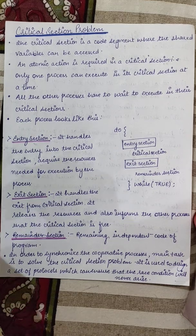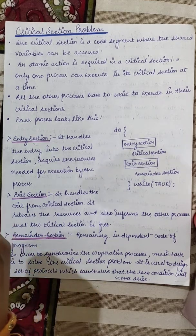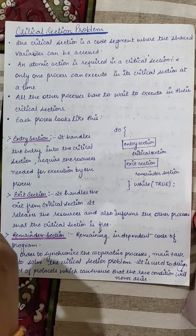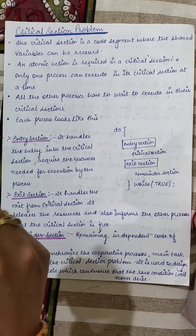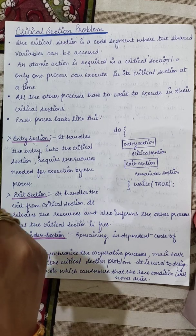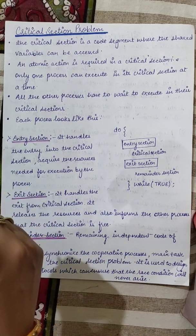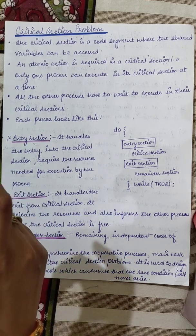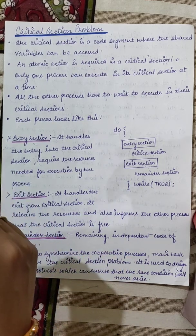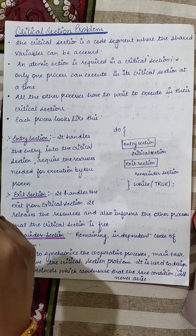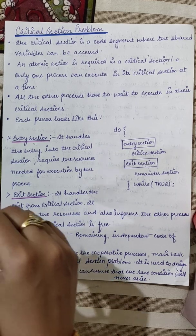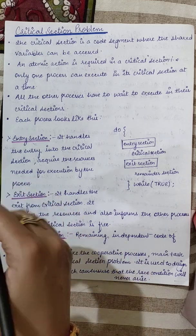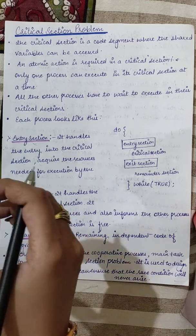Okay students, the topic for today's class is the critical section problem. Last classes we have seen what is concurrency, parallelism, and recently we have studied about race condition, which leads to data inconsistency. So now we are studying the critical section problem.